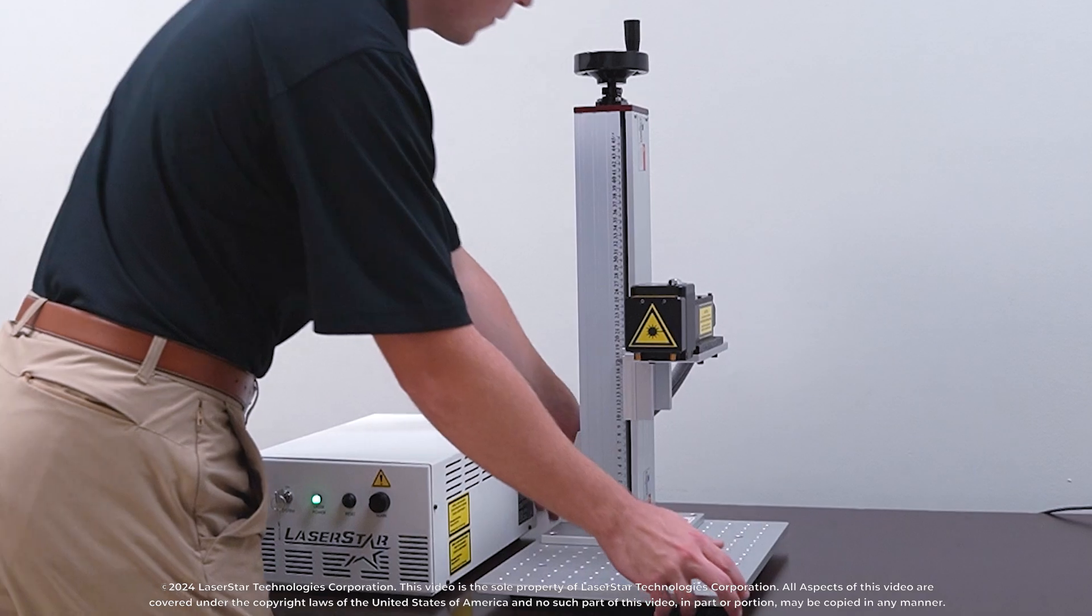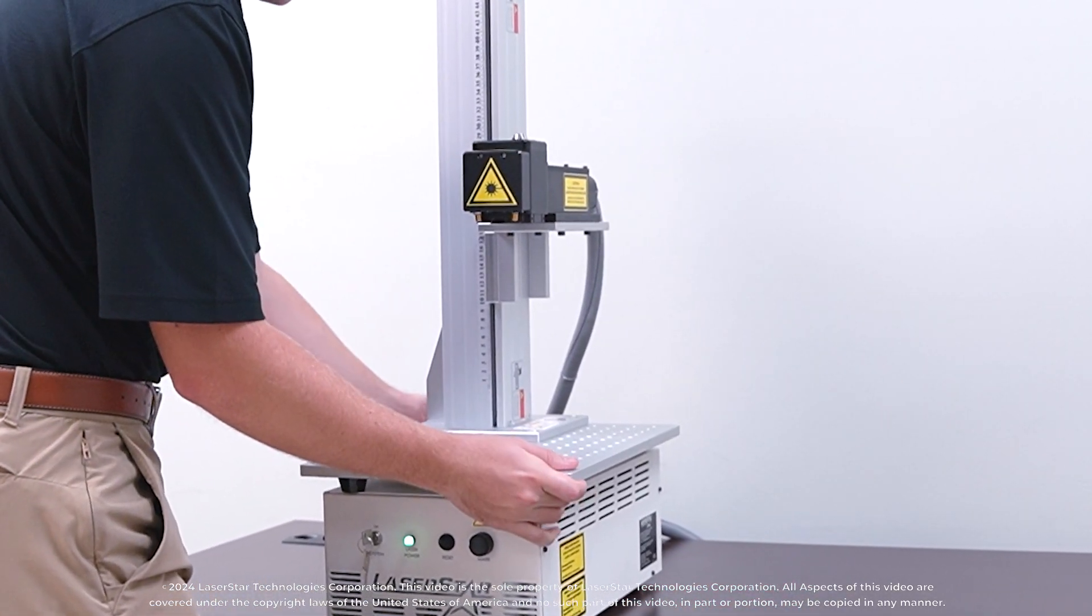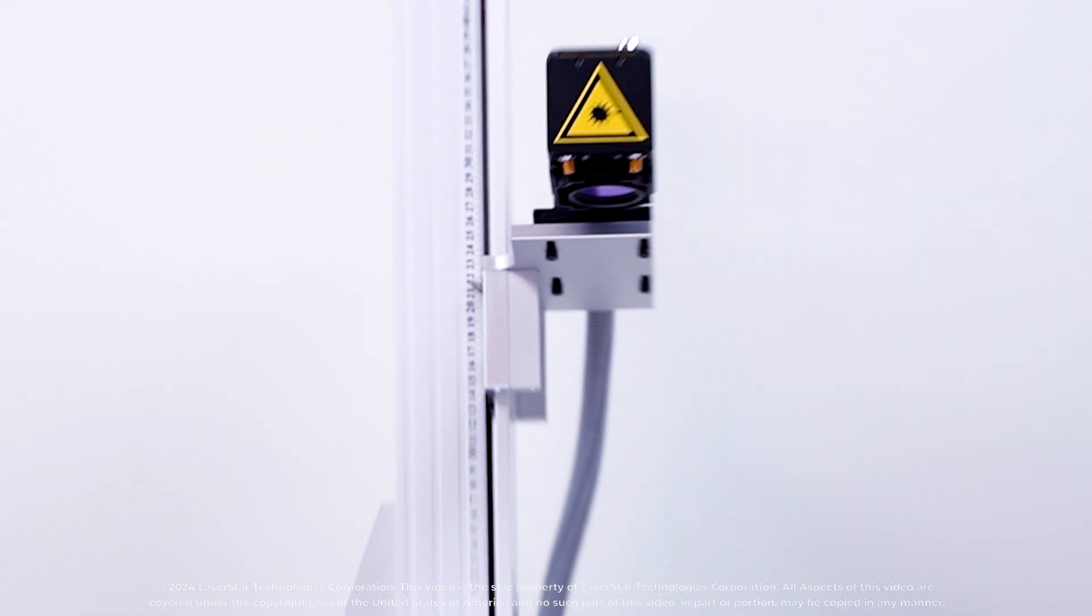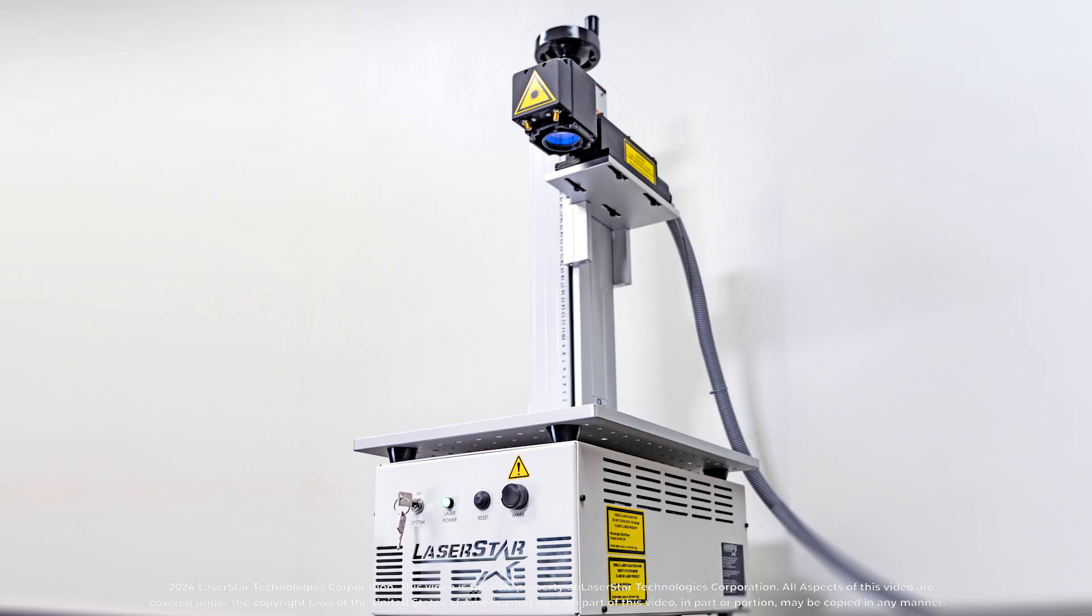This system can be set up in different configurations to optimize space. When in a stacked configuration, this system is less than 12 inches in width. The 3201 slim profile benchtop design makes it perfect for any job and location.